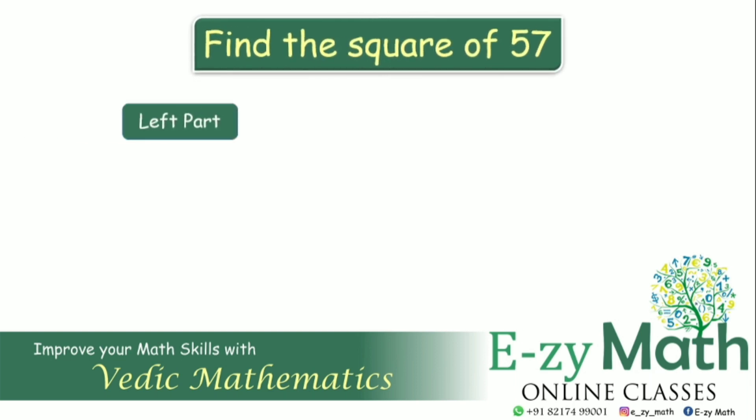To obtain the left part of the answer, add the square of 5 to 7, that is 25 plus 7 gives 32.